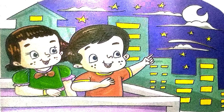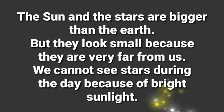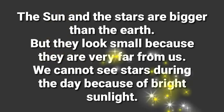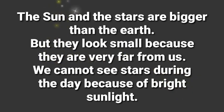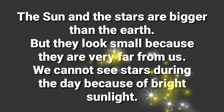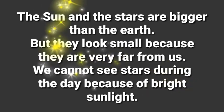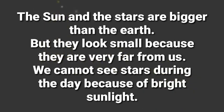Here is the picture of what the sky looks like at night — moon, stars, and planets. Sometimes clouds are there too. The sun and stars are bigger than the earth, but they look small because they are very far from us. We cannot see stars during the day because of bright sunlight.